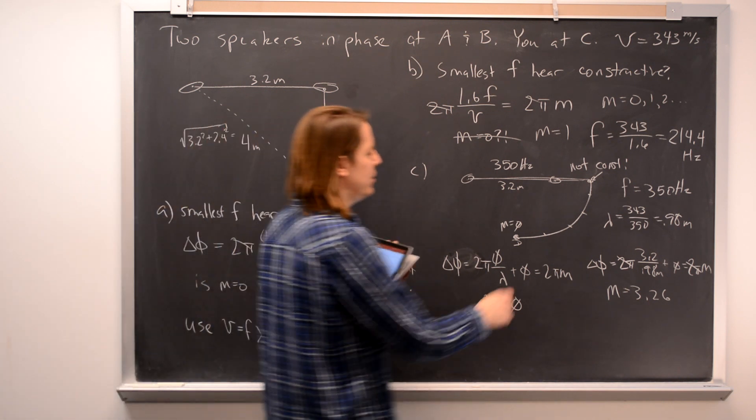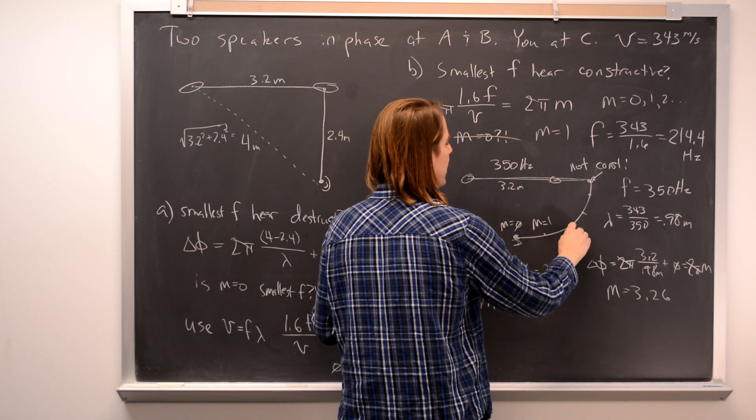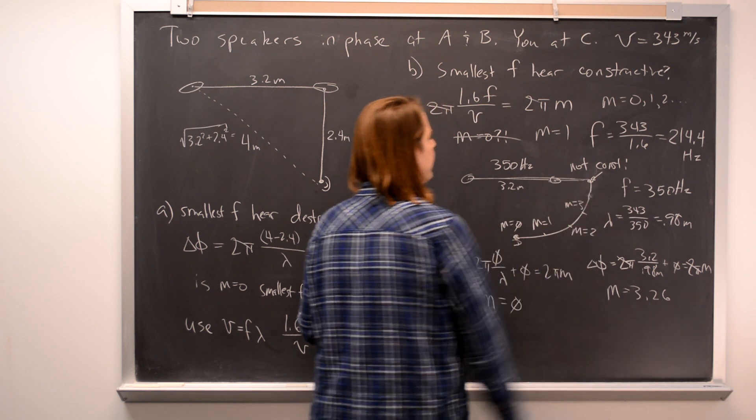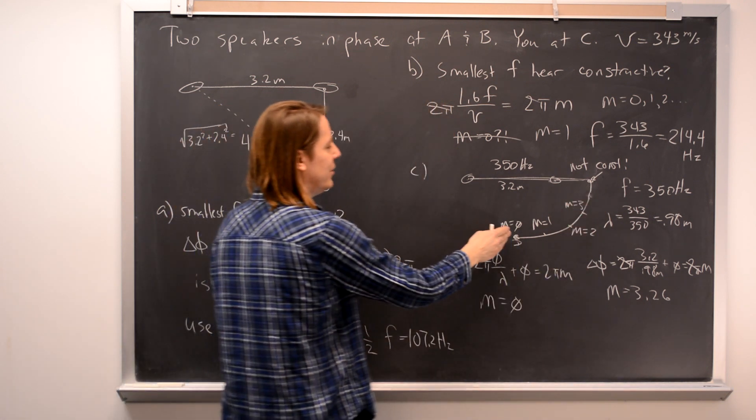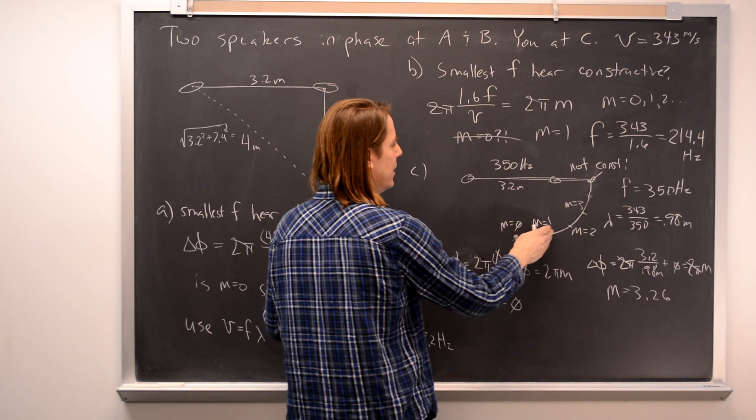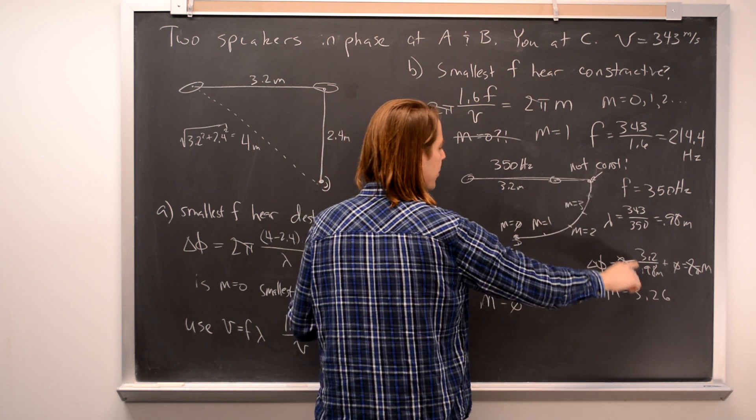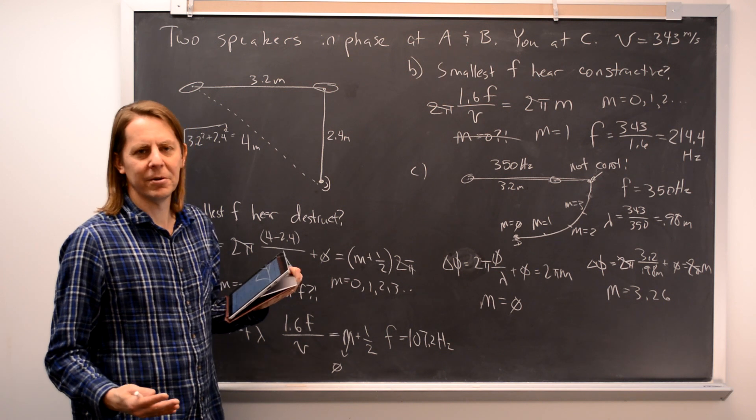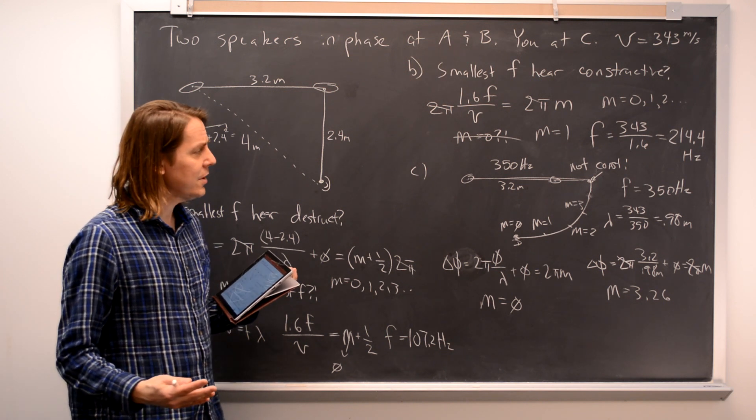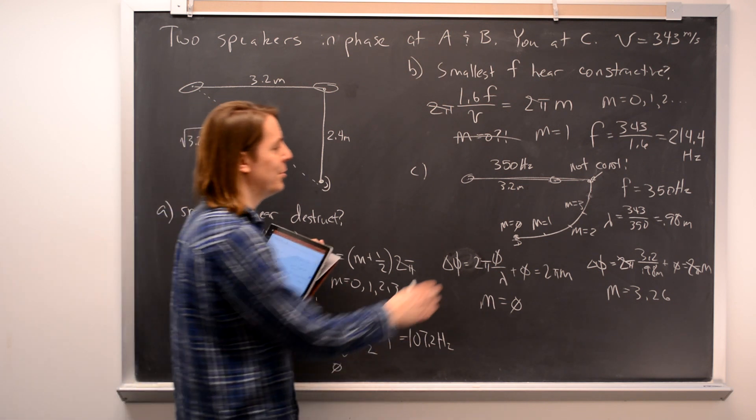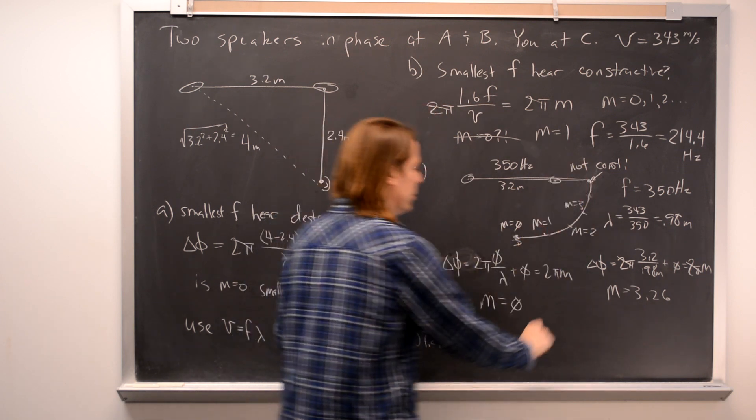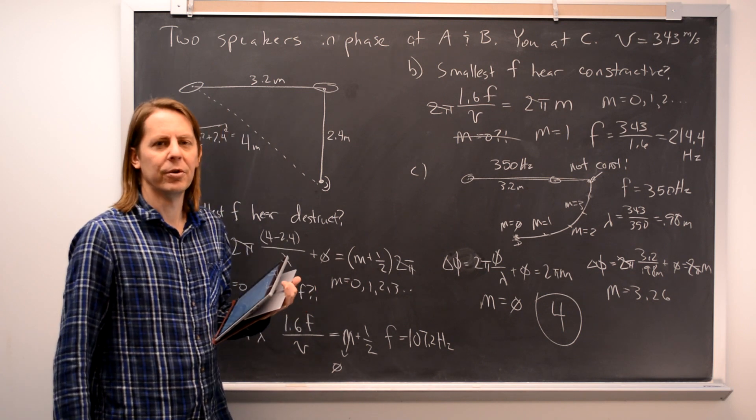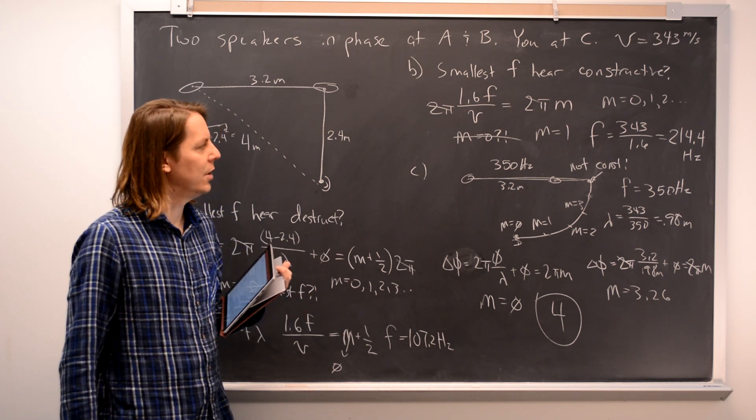But what that means is you must have passed M equals 1 and M equals 2 and M equals 3. Because what happened is the path difference was 0 and it grew to 3.2 meters. So you must have passed every distance in between. Therefore, you must have passed 0, 1, 2, and 3. So the answer is 4. You would hear all 4 of those maximums.